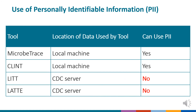Finally, we also wanted to highlight that some of the tools can work with personally identifiable information while others should not. The cluster investigation tool and MicrobeTrace work locally on your computer, so users can work with any identifiable information, such as names of cases. LIT and LATTE, however, are algorithms that are housed on CDC servers and therefore cannot accept identifiable information at this time. Should you want to use identifiable information with LIT or LATTE, we can show you how to run the code in RStudio, which is not as scary as you might think.